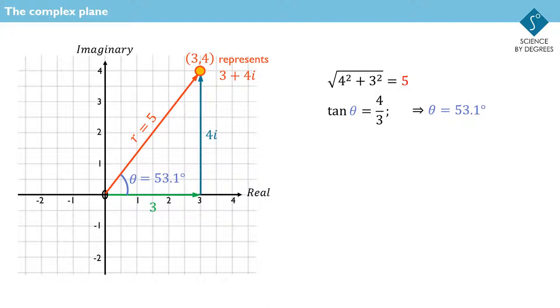We can go further. Just like the components of a vector, we can express this number 3 as 5 cos 53.1 degrees. And this 4i is the same as 5 sin 53.1 degrees lots of i.